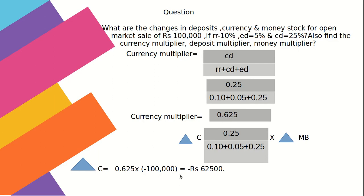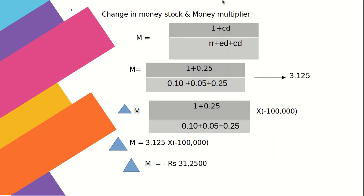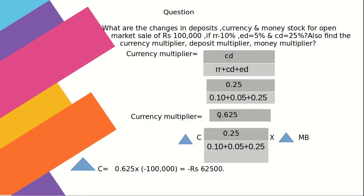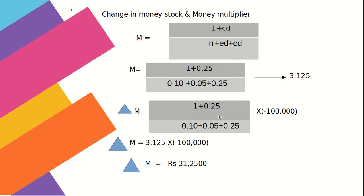Change in money stock: the money multiplier = (1 + CD) / (RR + ED + CD) = 3.125 in this case. Substituting values, the change in money = −3,12,500, a decrease. The deposit multiplier = 1 / (RR + CD + ED) = 2.5, giving a change in deposits of −2,50,000.